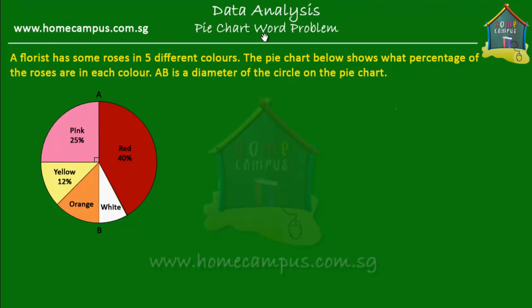Welcome to homecampus.com.sg. Let's solve this word problem on pie charts. A florist has some roses in five different colors. The pie chart below shows what percentage of the roses are in each color.